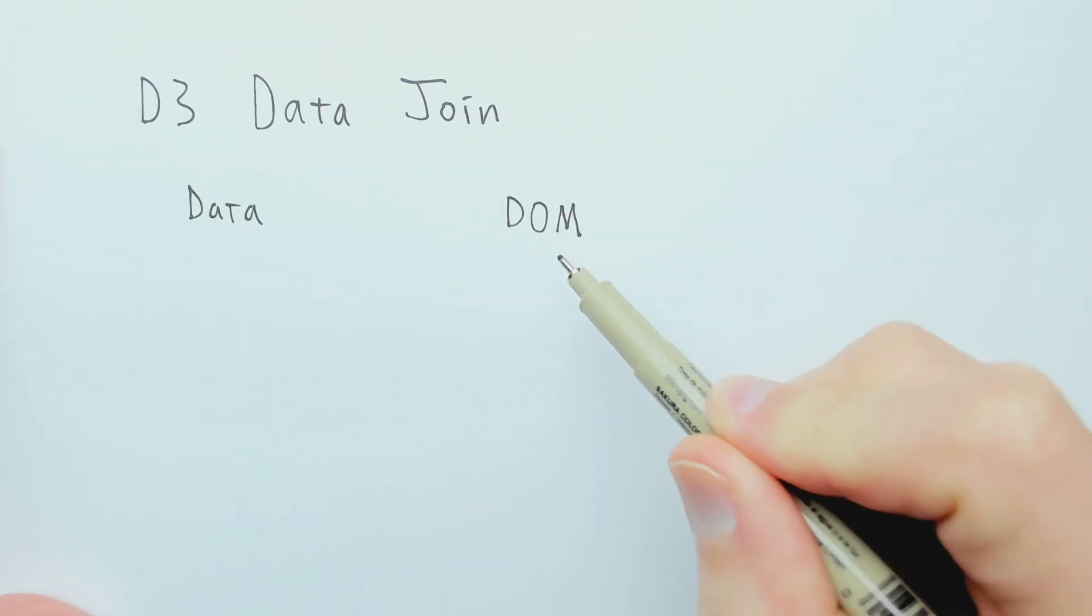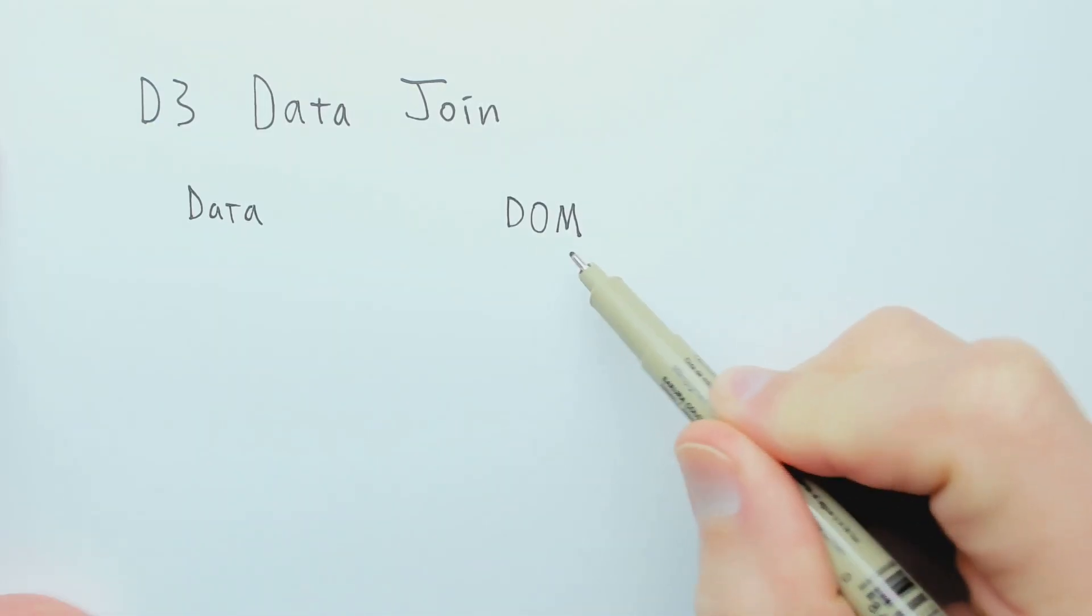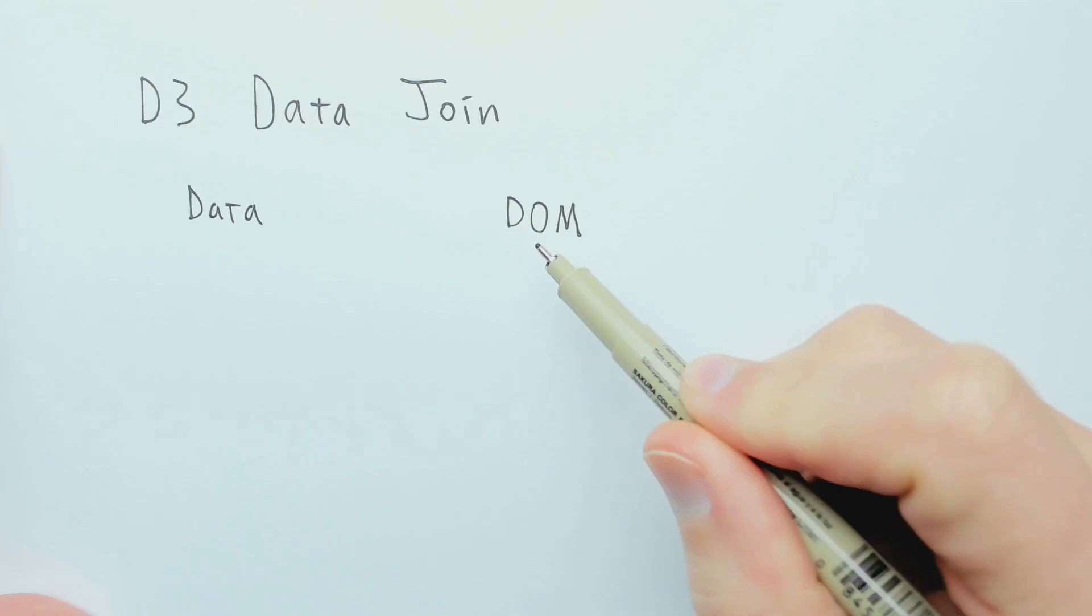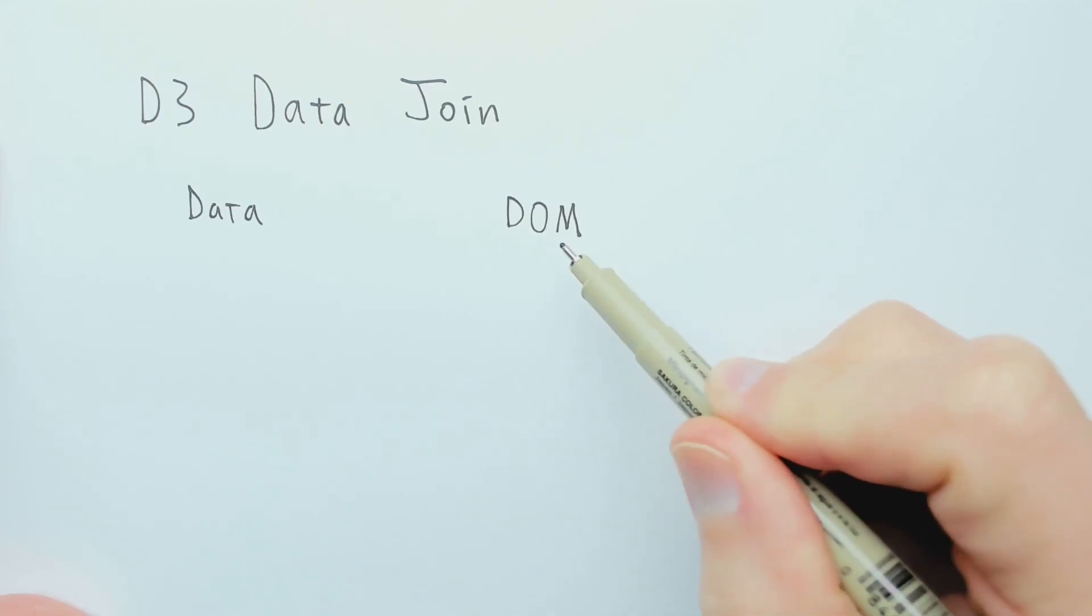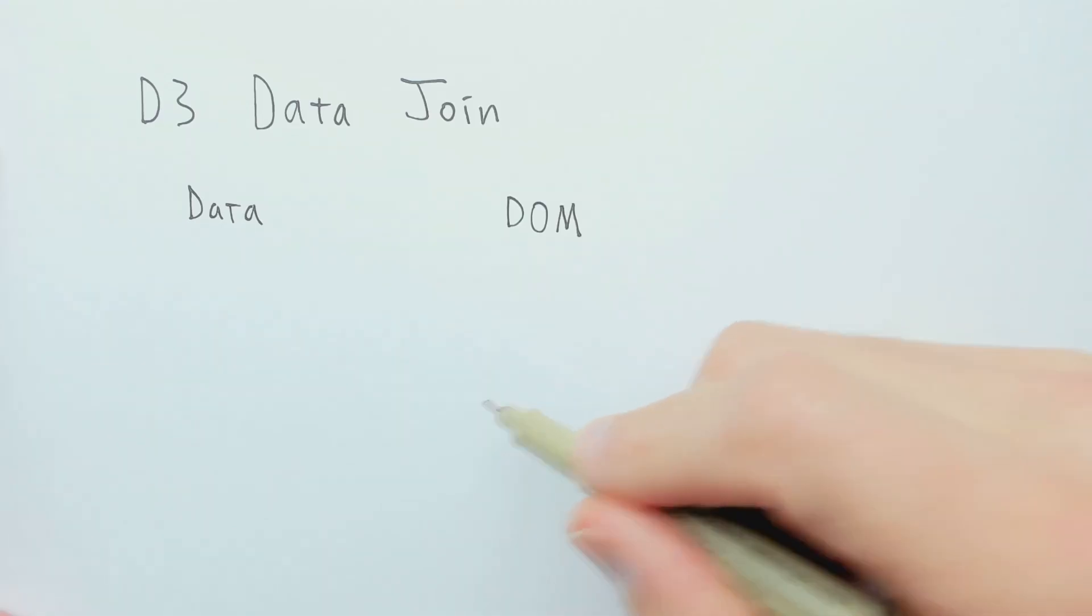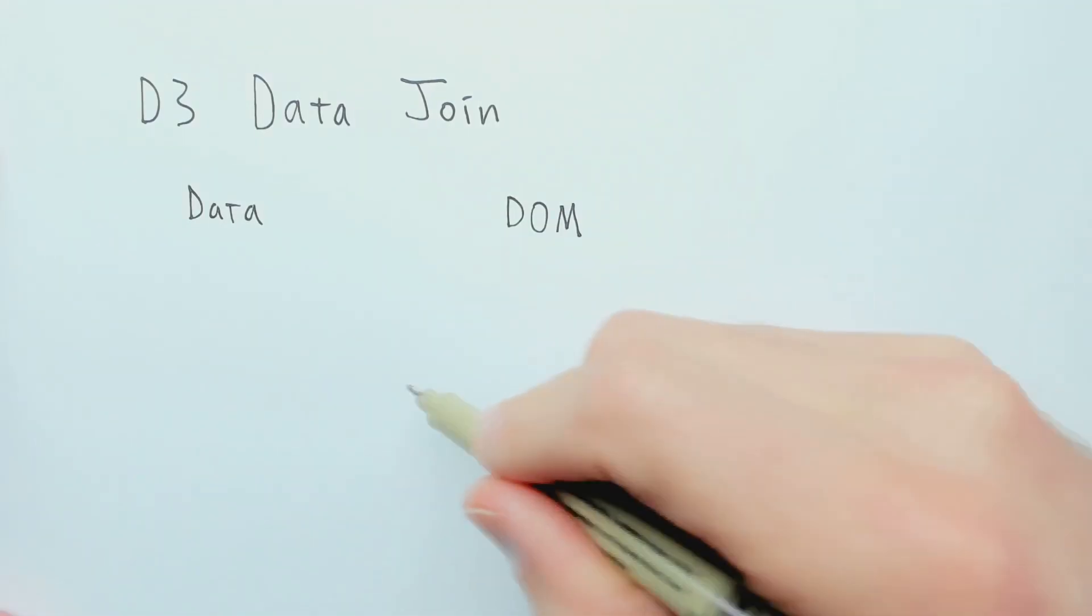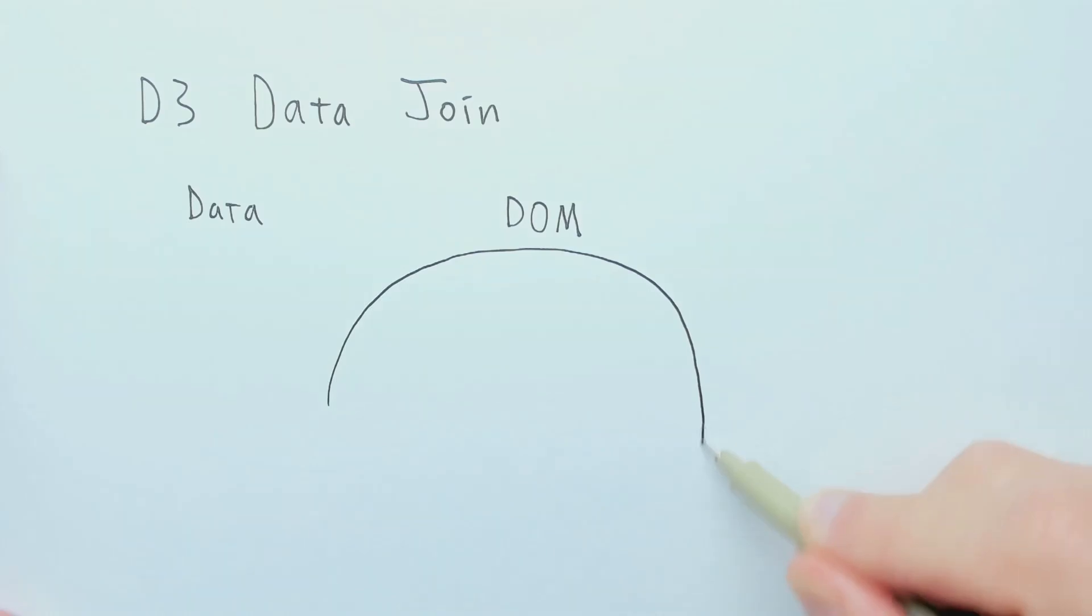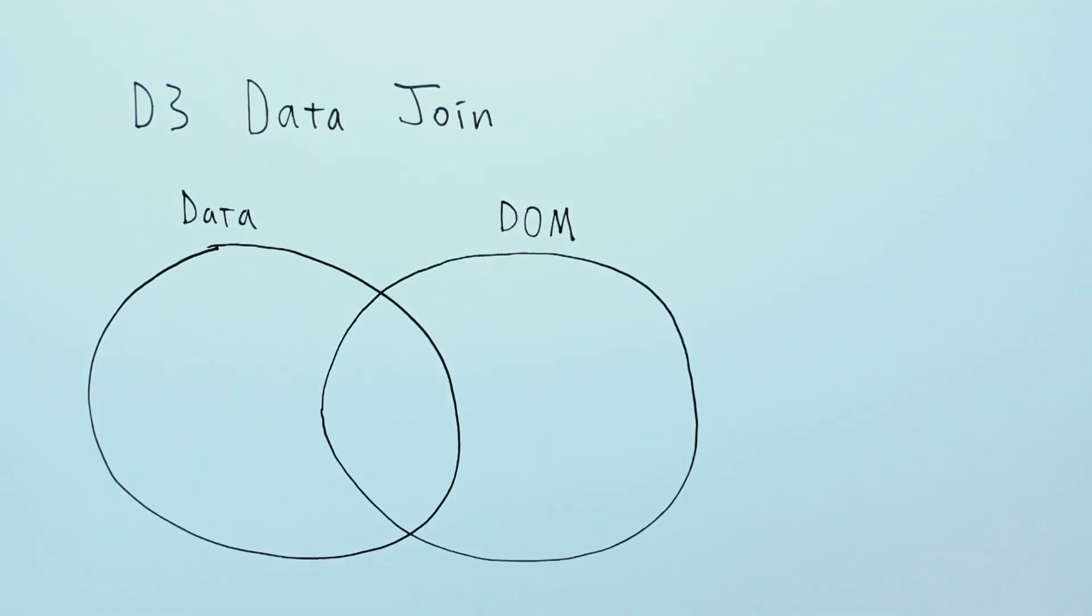And the DOM elements in the document object model are, for example, SVG circles or SVG rects. It could be anything. And we can think about these as overlapping sets. So here's a circle that represents all the DOM elements, and here's another circle that represents all the data elements.